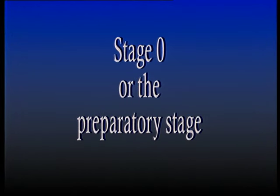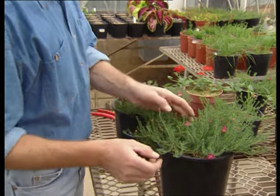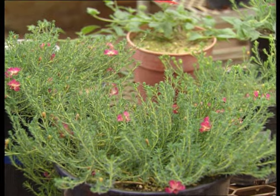Stage 0, the preparatory stage, is about preparing the stock plant for micropropagation. Two principal considerations are involved: one is reducing the potential for contamination by fungi, bacteria, viruses and other pathogens; the other is control of the physiological conditions of the starting plant material, also called an explant. Stock plants should be healthy and actively growing, not in or entering dormancy.